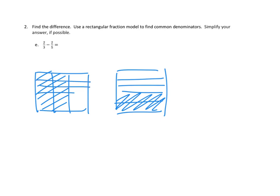So 1, 2, 3, 4, 5. And this one has gone horizontally into fifths, so we need to go vertically into thirds. 1, 2.